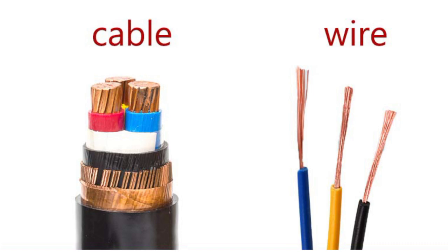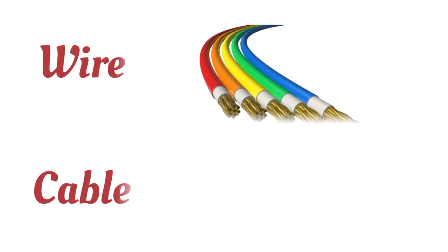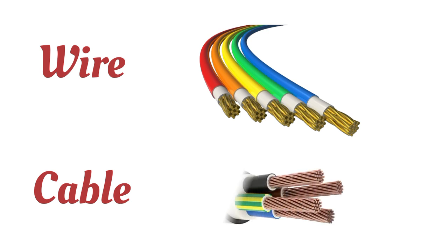Technically speaking, a wire is called an electrical conductor, whereas a cable is multiple conductors or a group of wires.